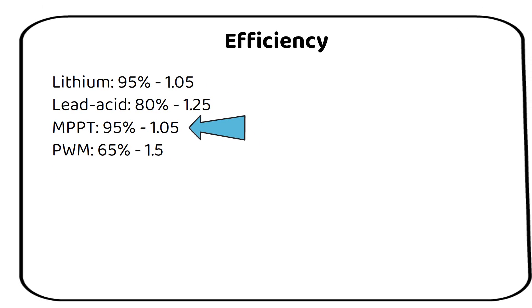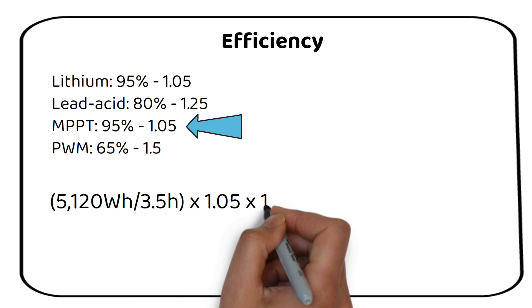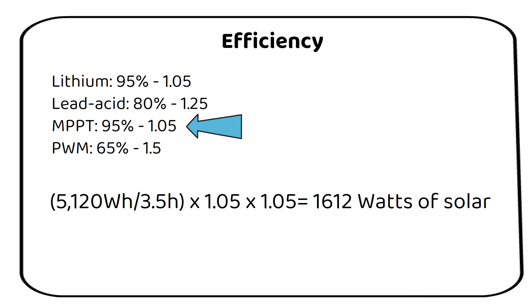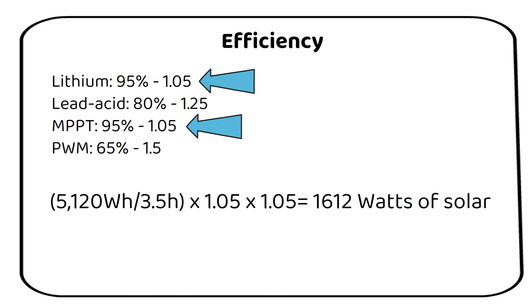Given these efficiencies, we need to adjust our previously calculated solar requirement. To account for the efficiency of both the lithium battery and the MPPT controller, we apply an efficiency factor to our original calculation. This is a modified formula for an MPPT with a lithium battery. This adjustment increases our requirements to approximately 1612 watts of solar power. This means we need an additional 150 watts over our initial calculation to compensate for system inefficiencies.